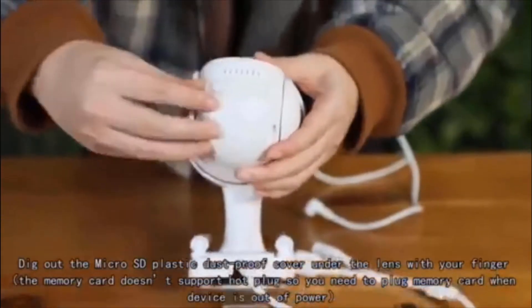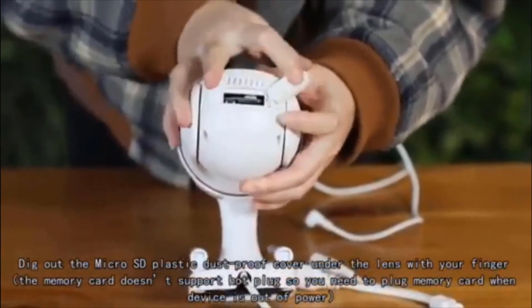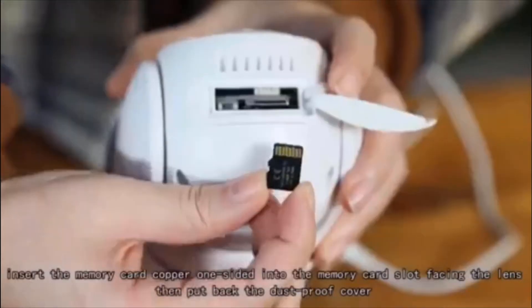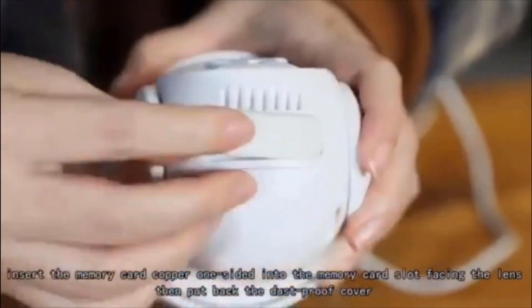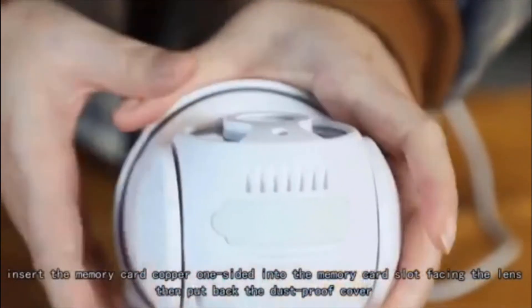Dig out the micro SD plastic dust proof cover under the lens with your finger. Insert the memory card copper one-sided into the memory card slot facing the lens, then put back the dust proof cover.